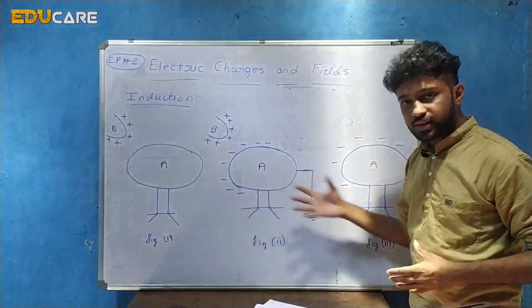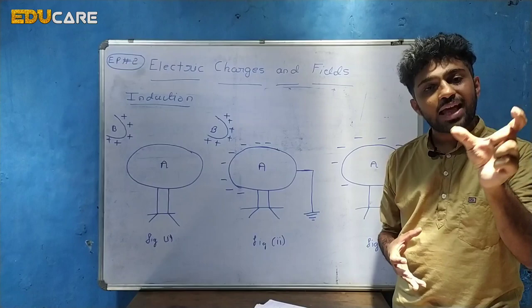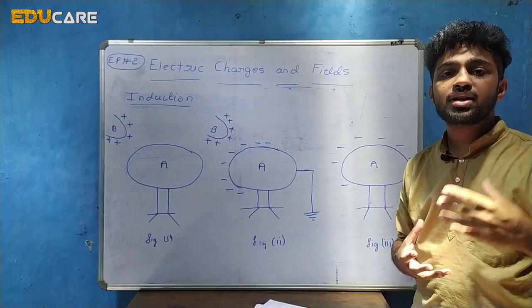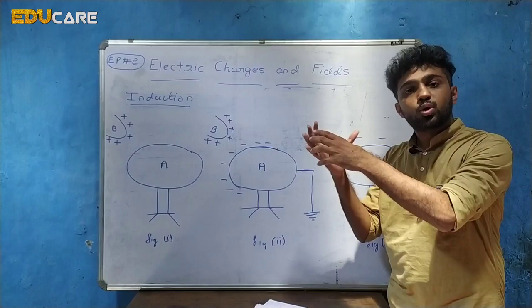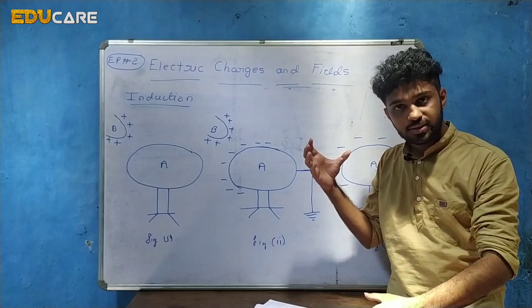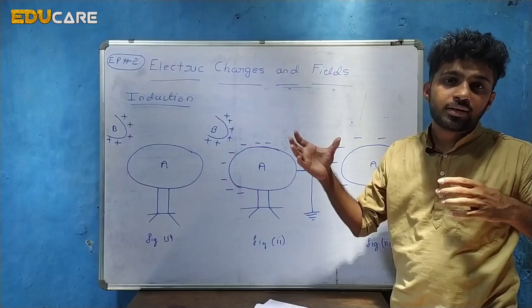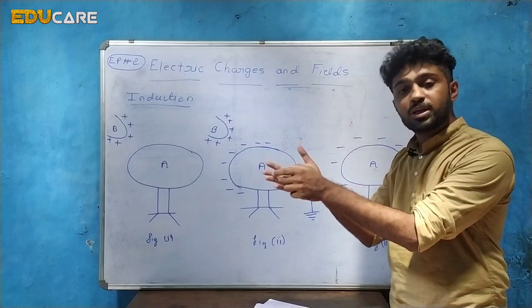Before going to the procedure, we have to know one property of charge: like charges repel and unlike charges attract. Like charges are those which have a similar kind of charge — for example, two positive charges or more are like charges. Similarly, two or more negative charges are also like charges. Unlike charges means one positive charge and one negative charge — those are unlike charges.